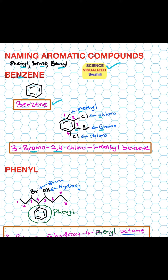At positions two and four we have chlorine, so that gives us 2,4-dichloro, because we have two chlorines. And then one-methylbenzene, where benzene is the parent name.